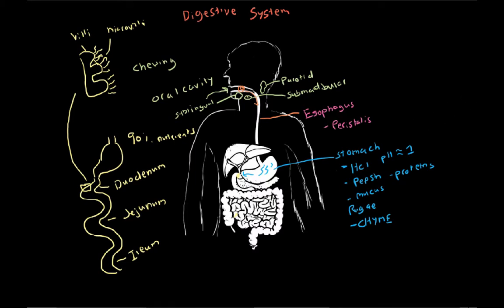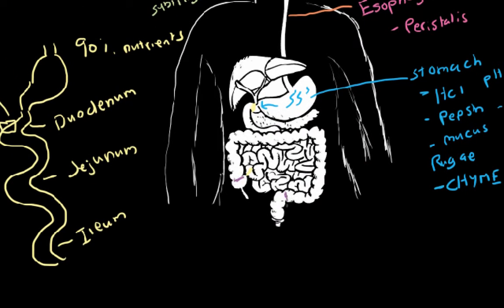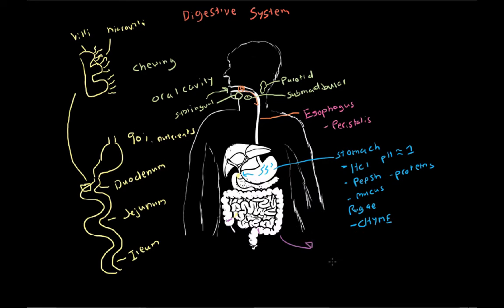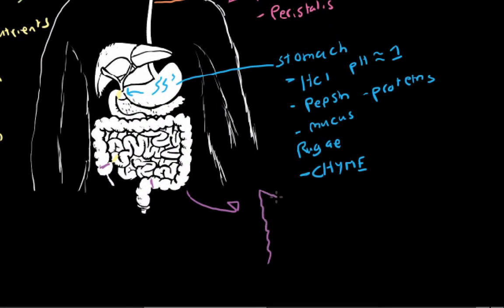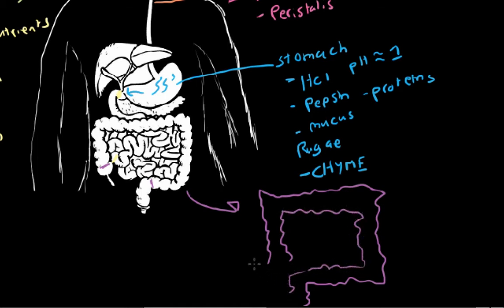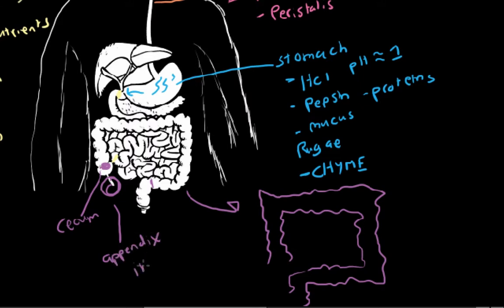The large intestine starts right about here and ends right here. It's going to have a few parts — it comes up, over, and down. The part where the small intestine enters the large intestine is called the cecum. The small intestine enters through the ileocecal valve, which makes sense because the last part of the small intestine is the ileum — it goes to the cecum, so ileocecal. Also, that little structure attached here is the appendix. Not much is known about the function of the appendix, but we think it may have some immune function.